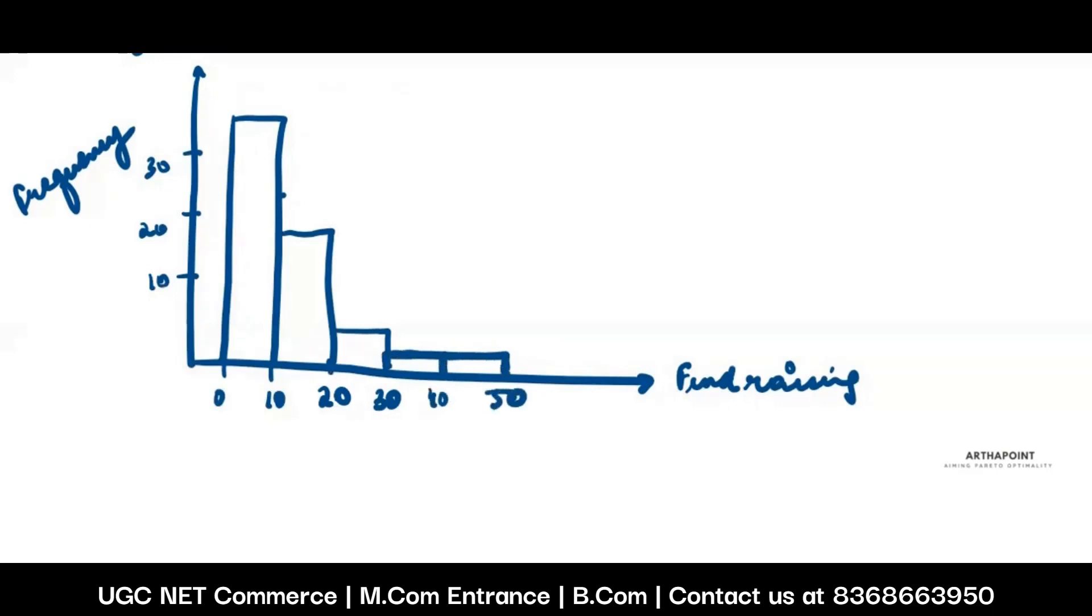And between 40 to 50, it is also 5. Nobody gives 50 to 60, 60 to 70. And then again, between maybe 80 to 90, some people give funds. When I make a graph like this, a histogram like this, I am able to interpret this data in a much better sense. I am able to understand which charities and how much fundraising takes place. In that sense, I am able to understand the data better.